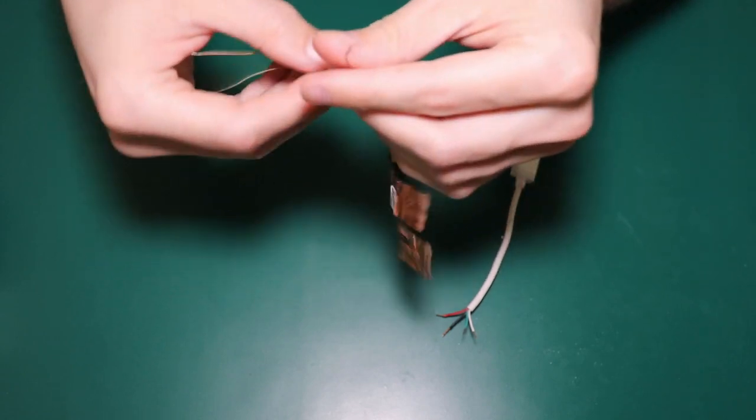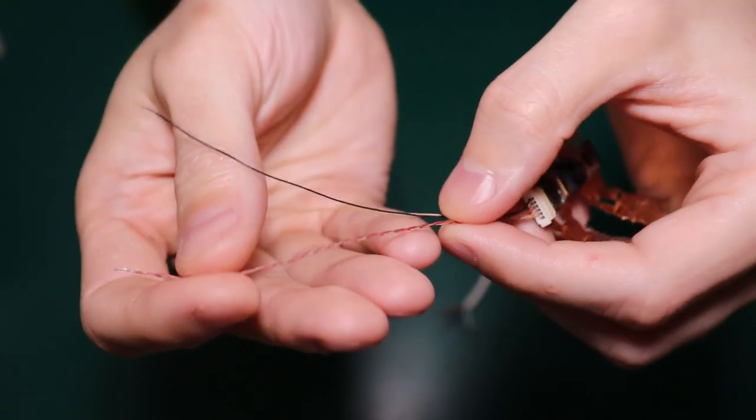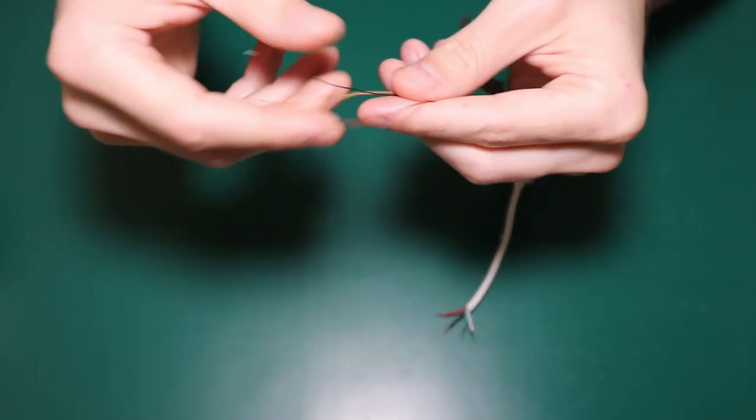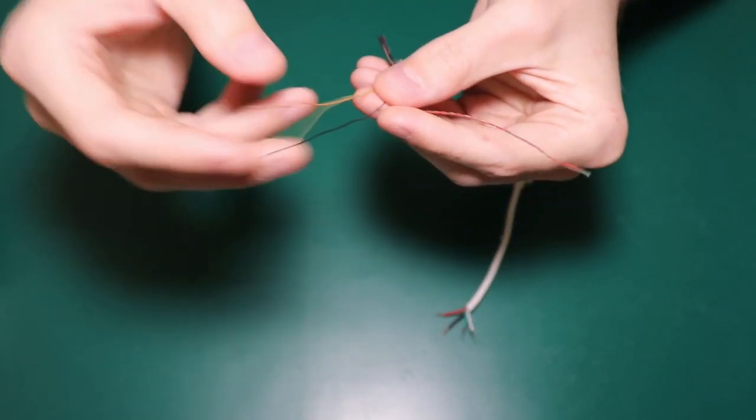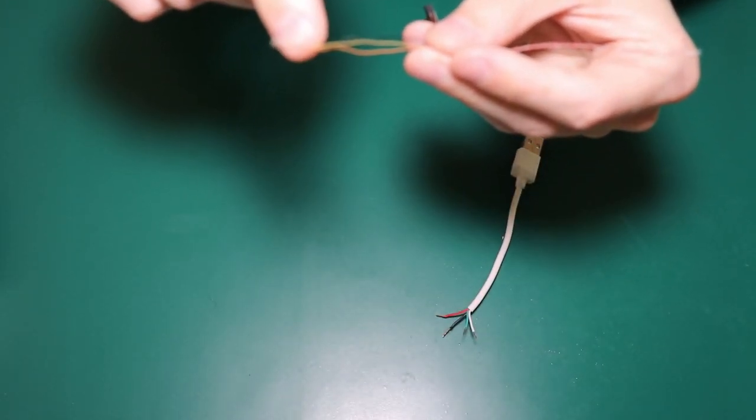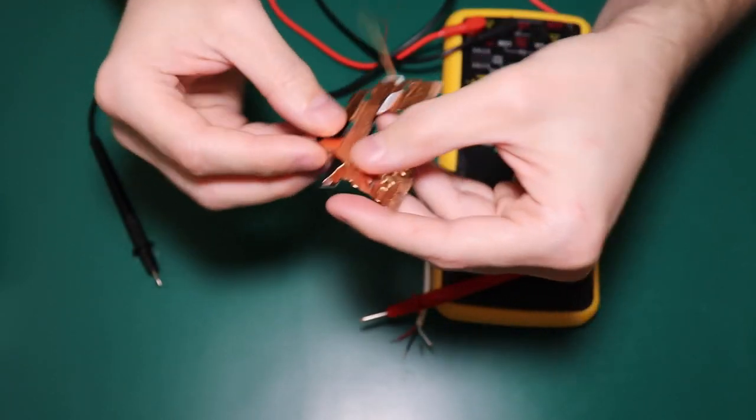And you have the same almost in the webcam as well. The two ones that are twisted together, these are the signal cables. One of these is ground and one of these is five volts. So we will test them. I will actually take this copper off.